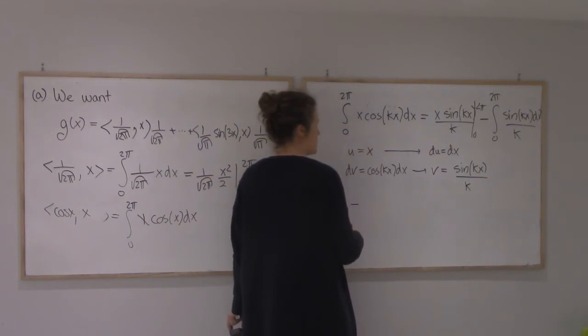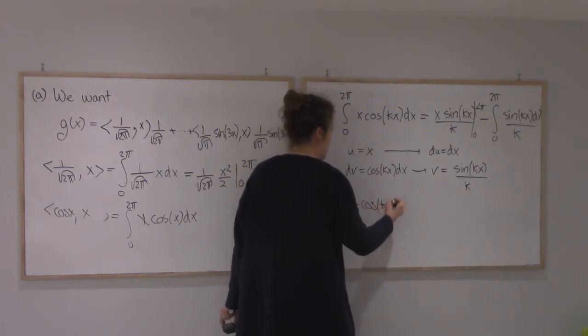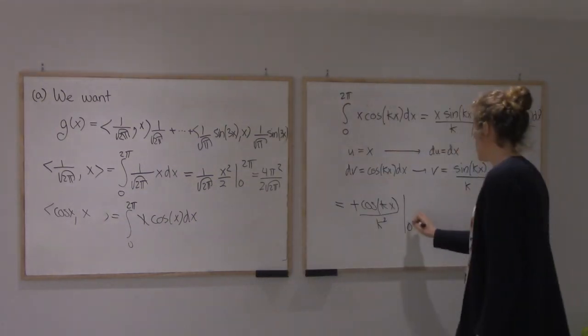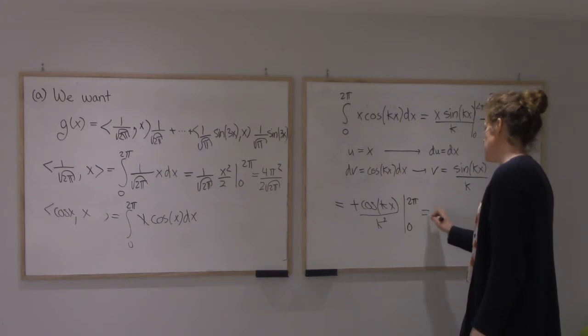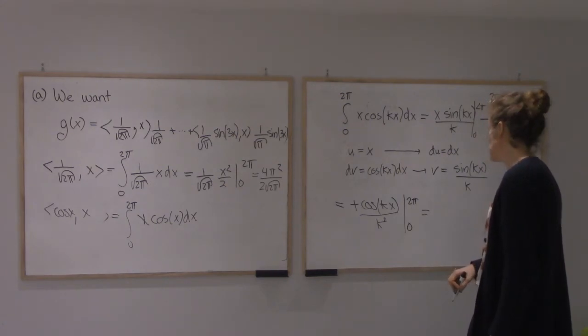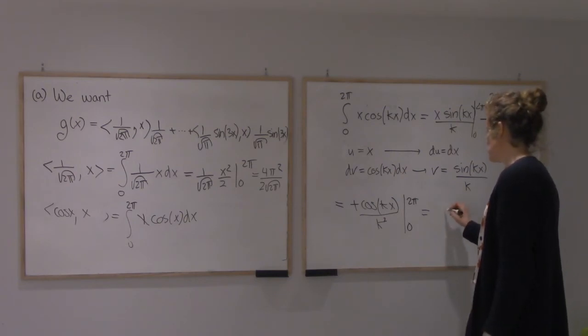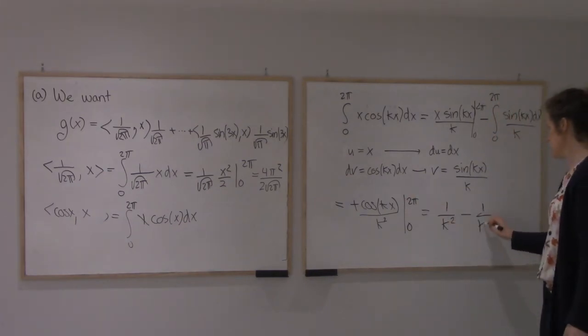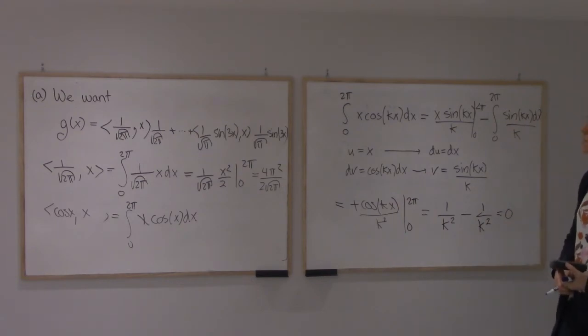So if I plug in 0 to 2π, this sin will give me 0. So I'm getting 0. And then the integral of sin is minus cos. And then I'm going to plug in 0 to 2π. And so I'll get cos of 2πk, which is 1, minus cos of 0, which is 1. So I'm getting 0.